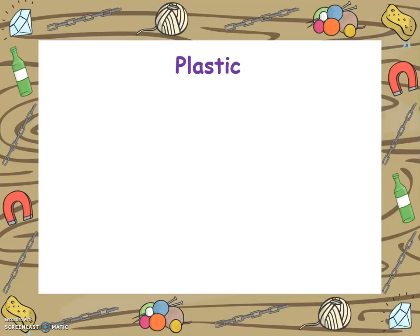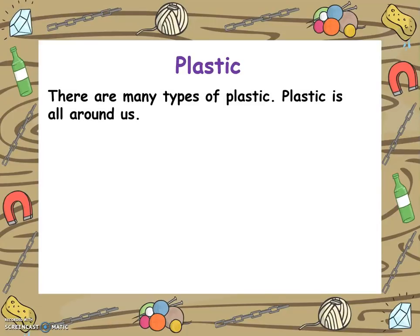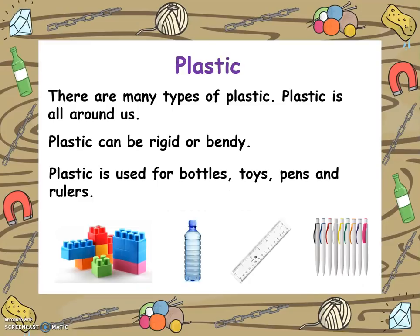The next material is plastic. There are many types of plastic. Plastic is all around us. Plastic can be rigid, which means it can't bend, or it can be bendy. Plastic is used for bottles, toys, pens and rulers, and many other items around us. How many items can you find in your classroom?